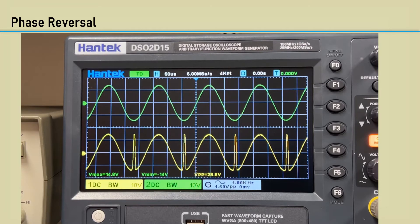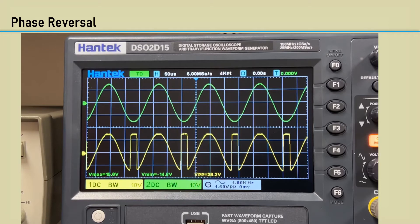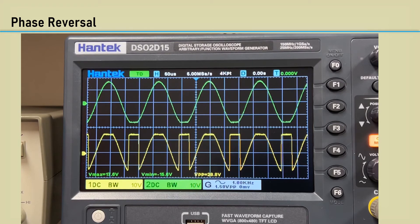As the minimum voltage gets around minus 13.6 volts, you see what's called phase reversal. It's this terrible thing that can happen to an op-amp when common mode voltages are exceeded.